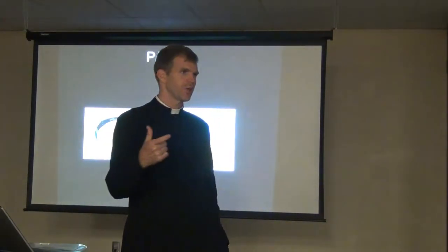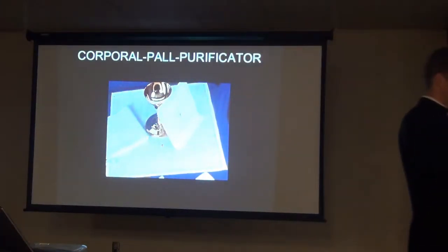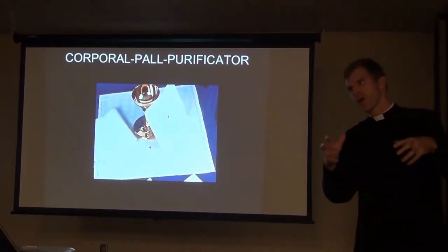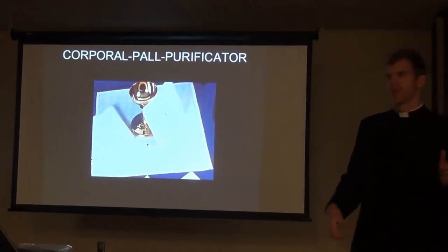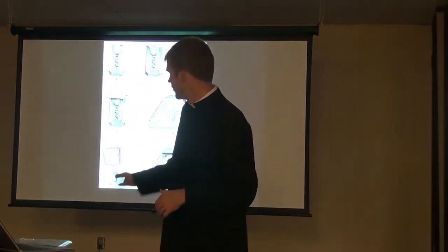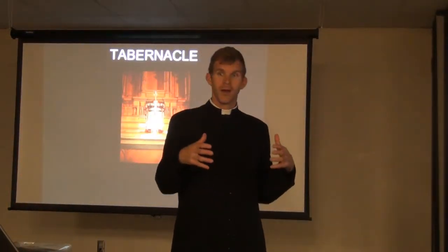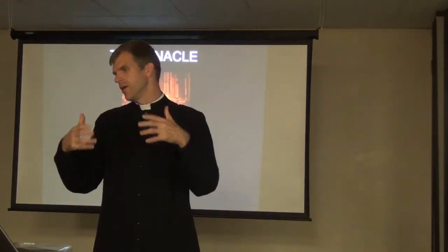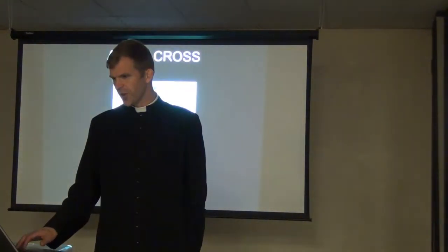There are two patens pictured here — a regular paten and a communion paten with a stick. The corporal is the linen that is unfolded so the Body of Christ might fall upon it during the fraction rite, the breaking of the bread. The pall is what covers the chalice. The purificator is the napkin that wipes the chalice. The tabernacle is the golden vessel where we place the Blessed Sacrament or the Eucharist. Then we have the side altar or shrine and devotional candles.